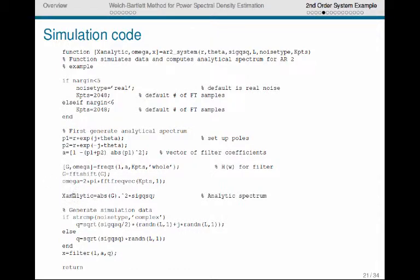So now the analytic spectrum, the analytic power spectral density, should just be absolute value of g squared times the variance of the input noise. So we can generate our simulation data just by first generating the vector q containing the samples of the discrete white noise, either complex or real, and then we just run it through that filter. So use the filter command, which takes the B and the A coefficients for the filter, and the input sequence q. This is the function that we use to simulate the data for all the examples in the rest of these slides.